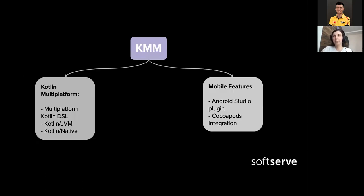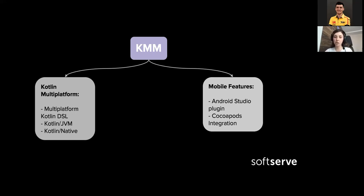What is Kotlin Multiplatform Mobile? It's an SDK for cross-platform mobile development, and it consists of two basic features. First is Kotlin Multiplatform, which contains the multiplatform Kotlin domain-specific language, Kotlin JVM, and Kotlin Native. It also contains mobile features such as an Android Studio plugin and CocoaPods integration.